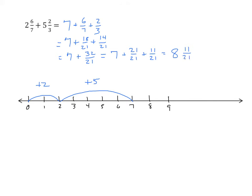I'm going to continue. So that is the same as 7 plus 21 twenty-firsts, plus 11 twenty-firsts. That equals 8 and 11 twenty-firsts. Let's represent that on the number line. We're going to first add 18 twenty-firsts, and then we're going to add 14 twenty-firsts. And we arrive at 8 and 11 twenty-firsts.